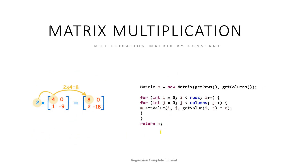Scalar multiplication is simpler — we have a constant and a matrix, and we multiply that constant through all the values of the matrix.